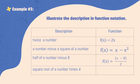How about half of a number minus 8? The function is X minus 8 divided by 2. Lastly, for the description square root of a number times 4, the function is 4 times square root of X.